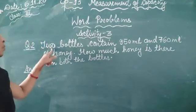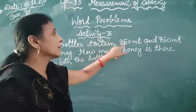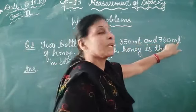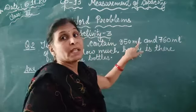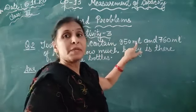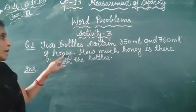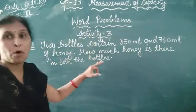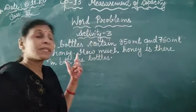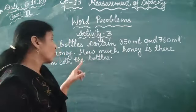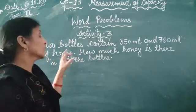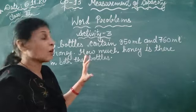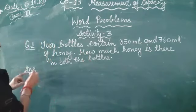Question number 2: two bottles contain 950 millilitre and 760 millilitre of honey. How much honey is there in both the bottles? In this question we add, because we are given both the bottles and need to find the total honey. Clear — so we write a statement.